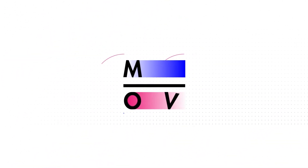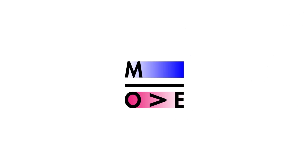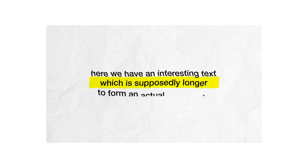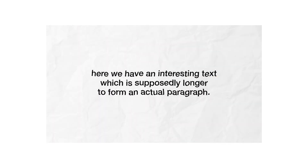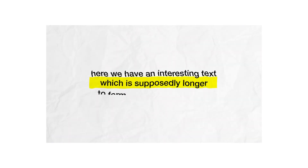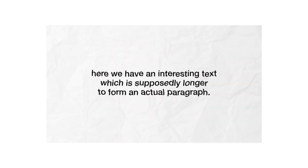Hey guys, how's it going? MoveMotionGraphics here and today we'll be taking a look at how you can make Vogue style text reveal and transition in After Effects without any plugins. We'll be animating a sentence and then a paragraph text. They look similar but they're animated in quite a different way, so we're gonna take a look at two different approaches.